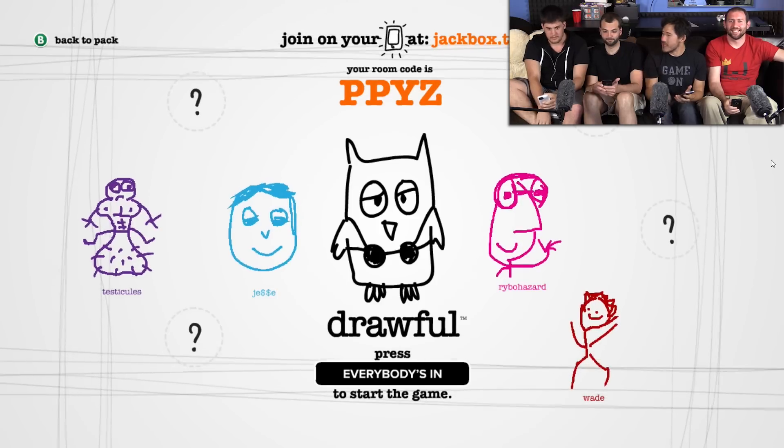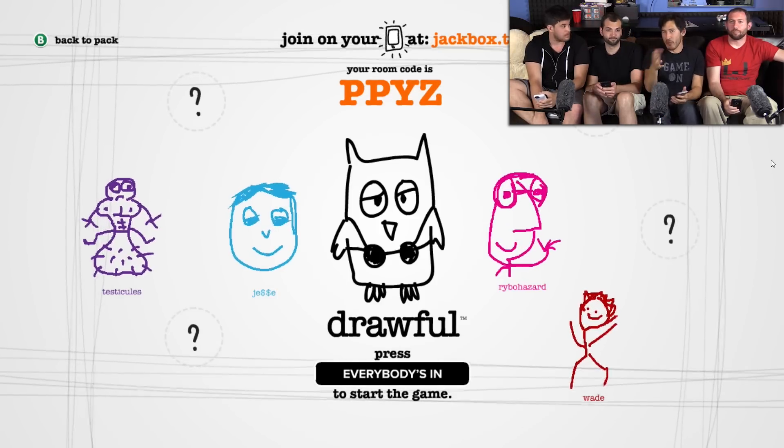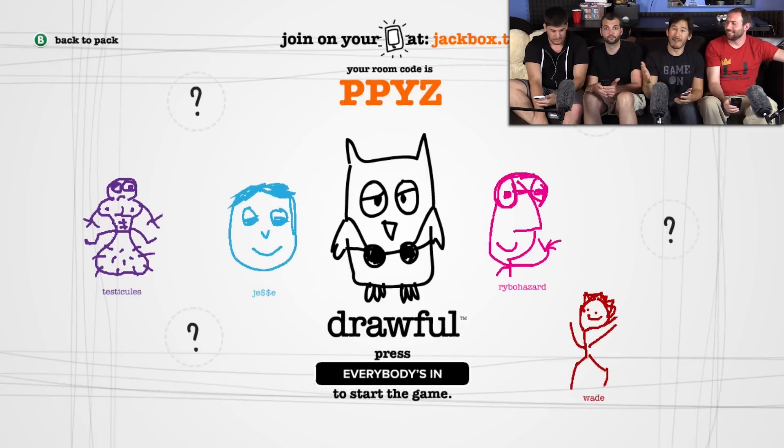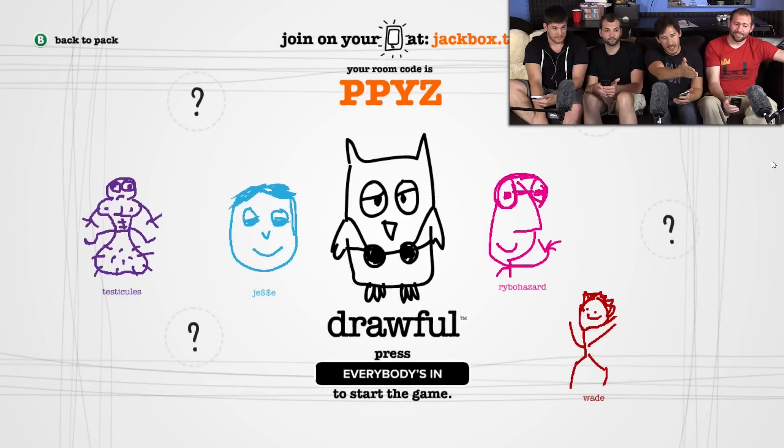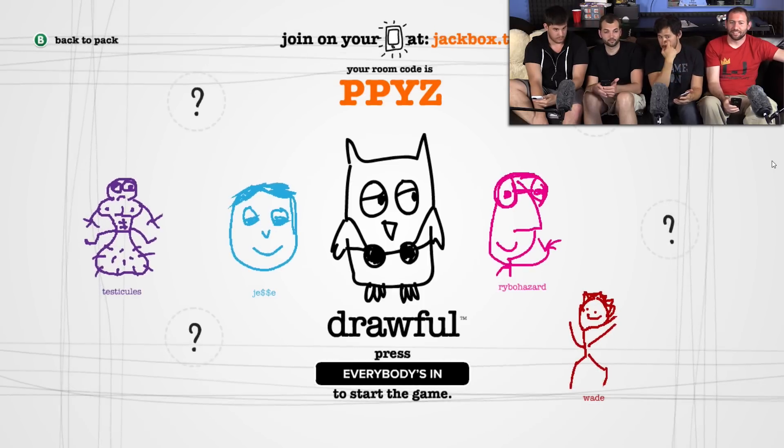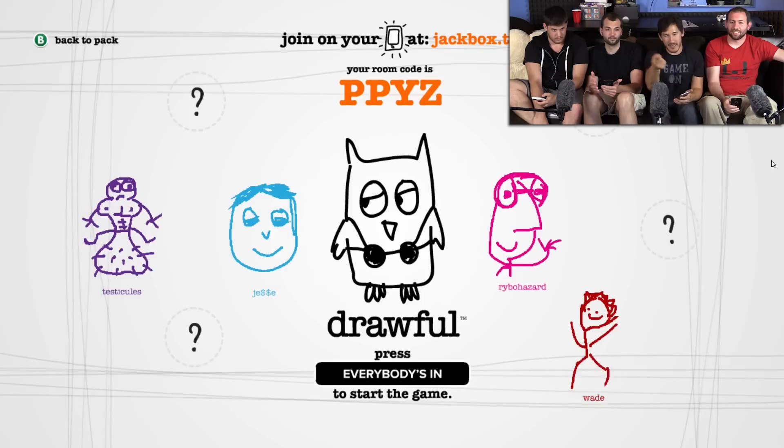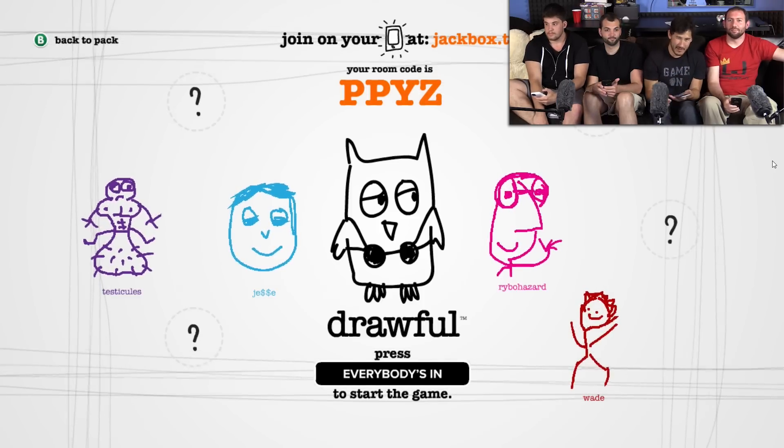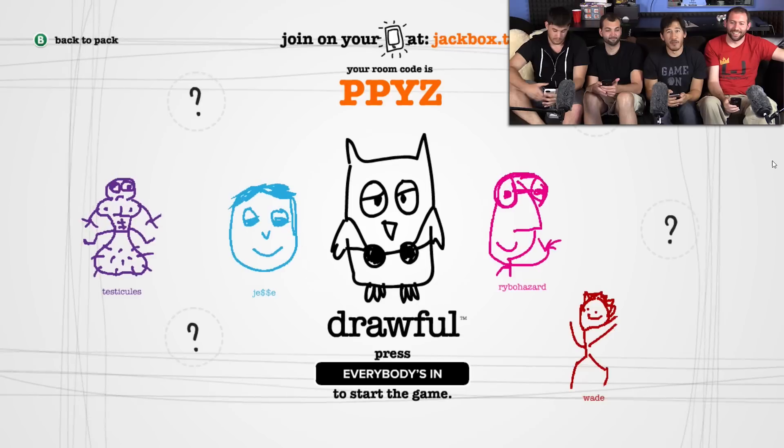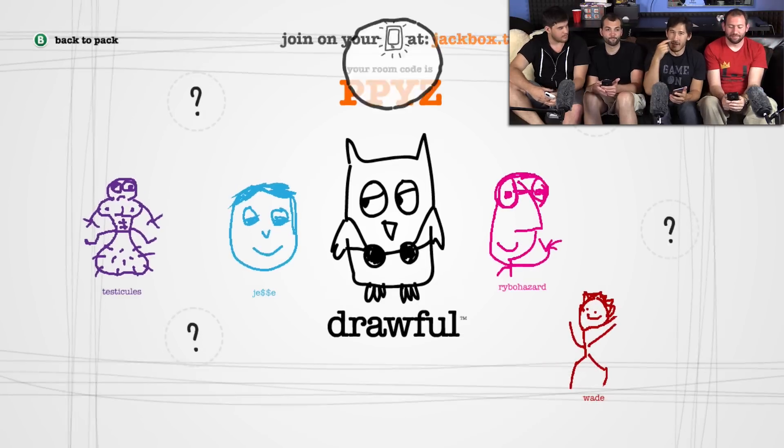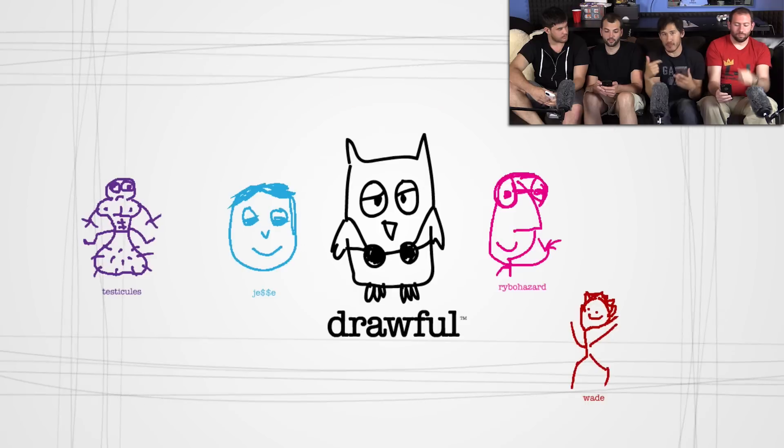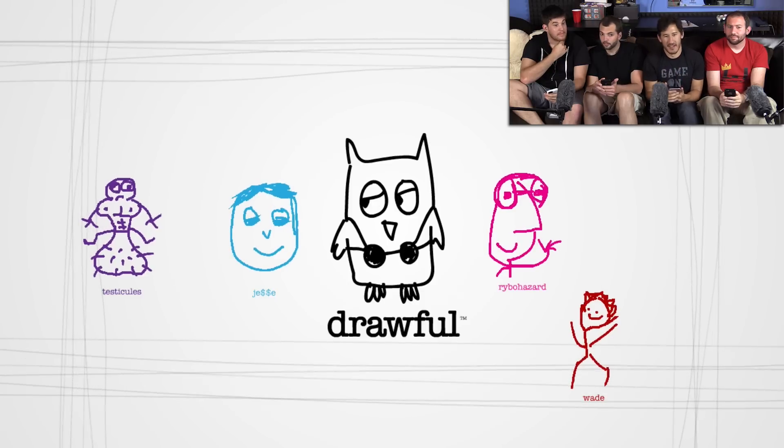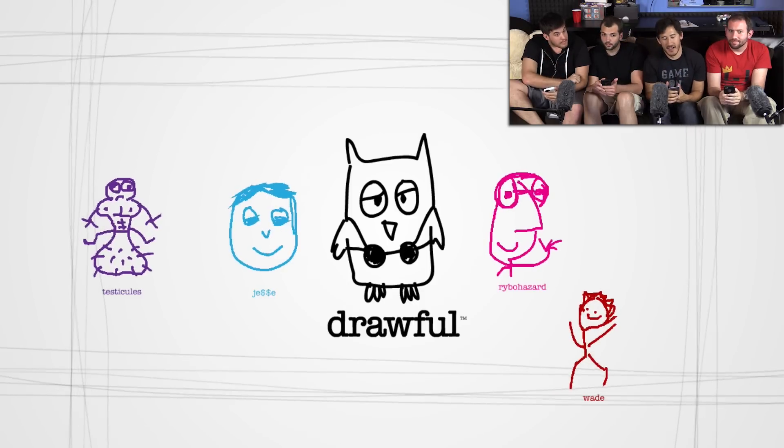I played Drawful with these guys. They love the game. The other two guys are over there, but we only want to keep it to four players, or else it'd be crazy. But we finally decided to play this because the Game Grumps did this on their livestream, and it was a lot of fun! So, I am Testicules. Jesse is Jesse with dollar signs and a really bad drawing. Rybo-hazard. Wade? I'm me. Okay, anyway, so we're gonna play Drawful!